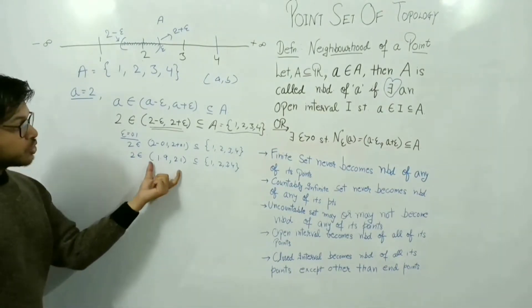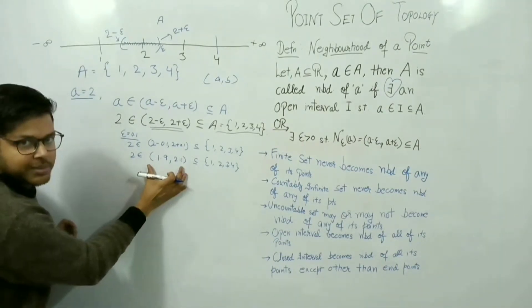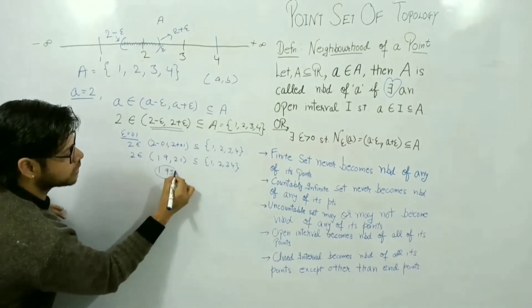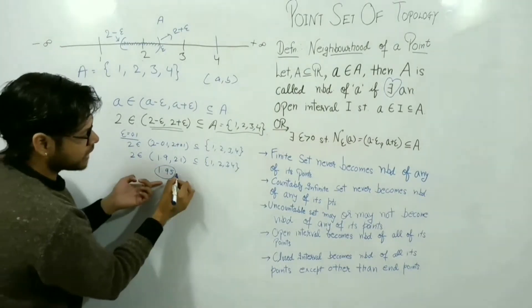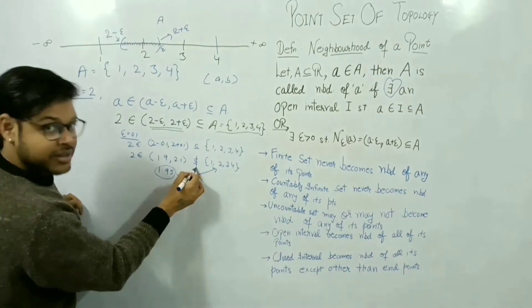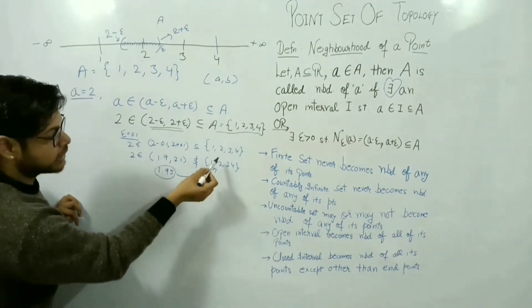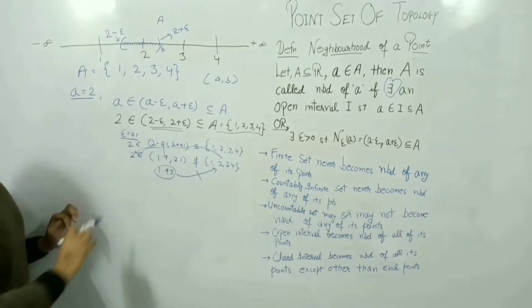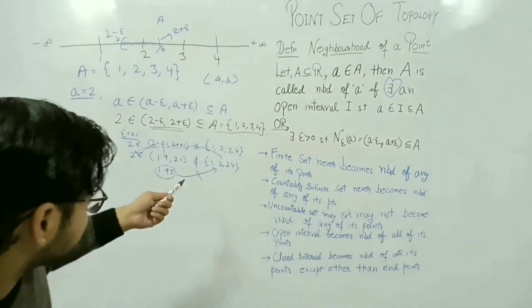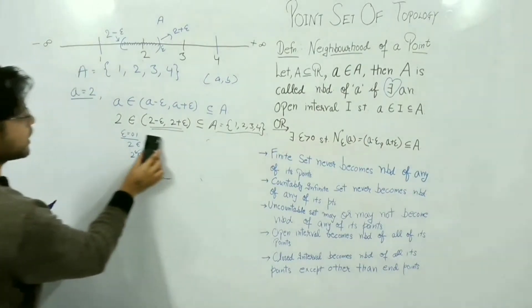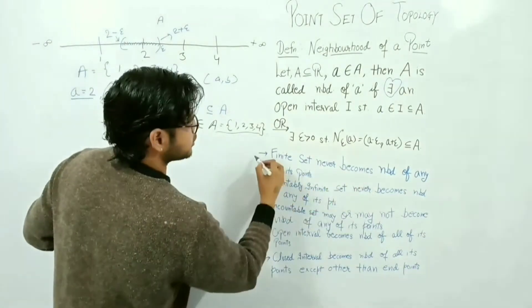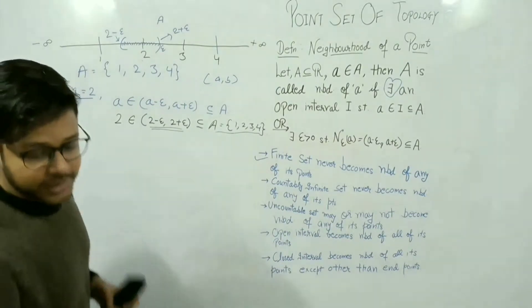The interval (1.9, 2.1) contains infinite, in fact uncountable, numbers between 1.9 and 2.1. We studied in previous lectures that this is an uncountable set. But our set {1, 2, 3, 4} is finite, so (1.9, 2.1) cannot be a subset of {1, 2, 3, 4}. Therefore, the finite set will never become a neighborhood of any of its points.